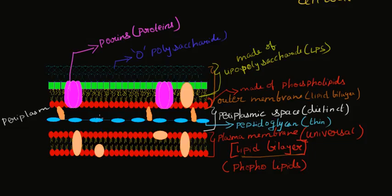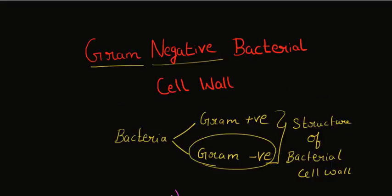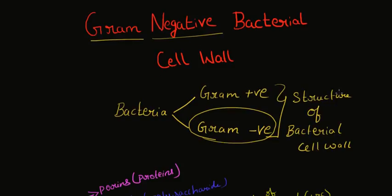One more structure left to cover: the orange structures here are called Braun's lipoprotein. These lipoproteins are situated in the periplasm and anchor the outer membrane to the peptidoglycan layer. That covers the structure of the gram-negative bacterial cell wall. See you in the next video, thank you.